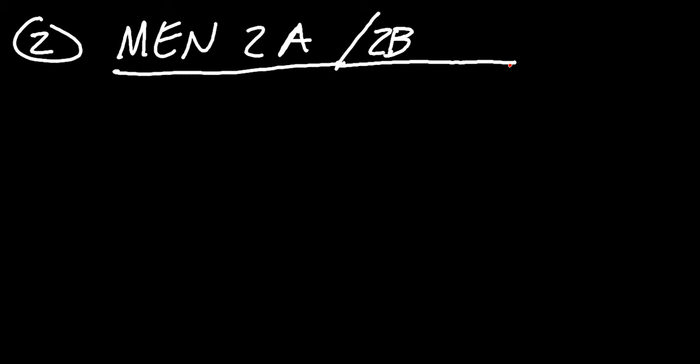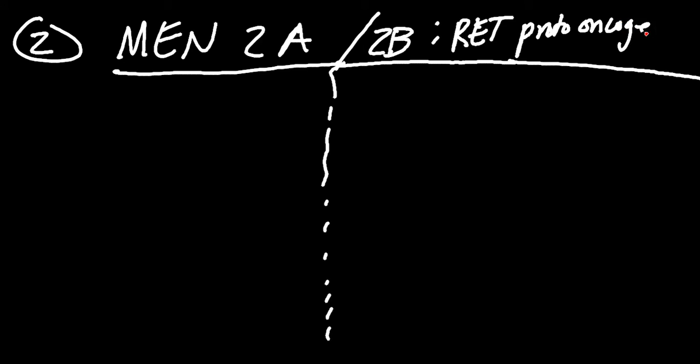Now let's take a look at the second one. This is MEN2A, which implies there's going to be a 2B. The MEN2A and MEN2B are going to be kind of the same, kind of different. Both of these involve an RET proto-oncogene mutation.